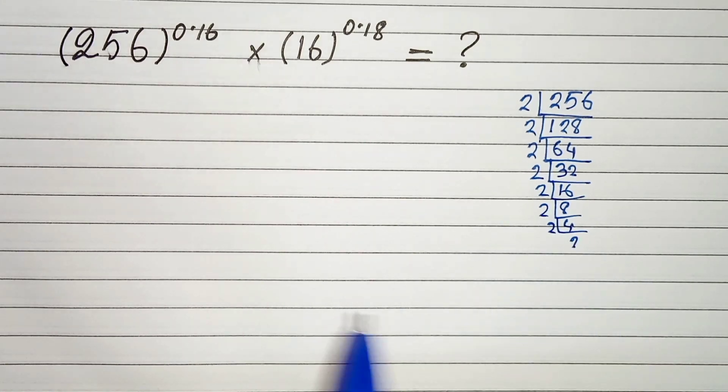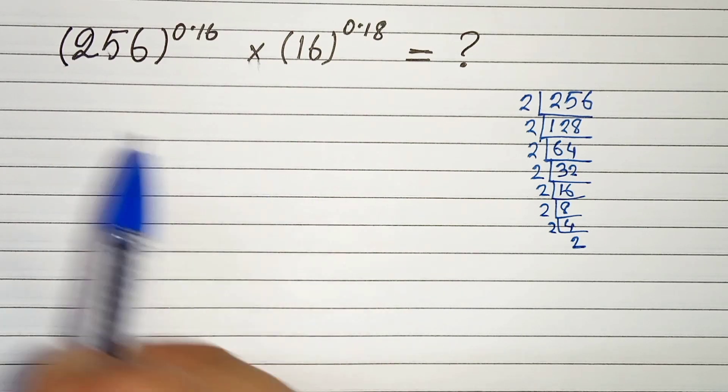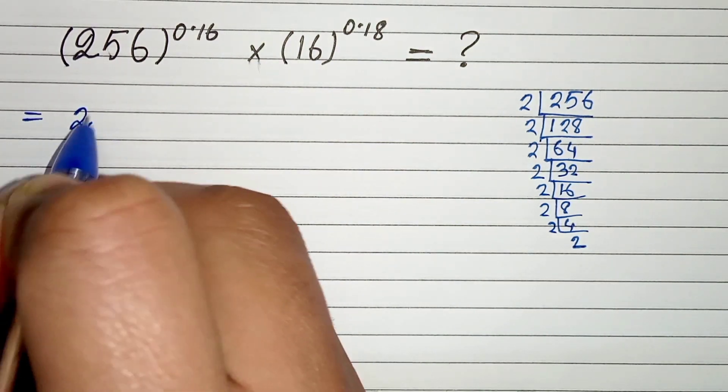So 1, 2, 3, 4, 5, 6, 7, 8. So 256 can be written as 2 to the power 8.